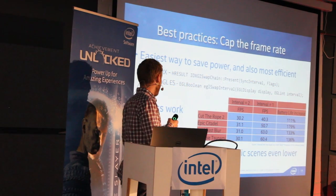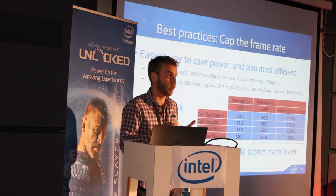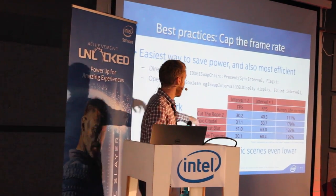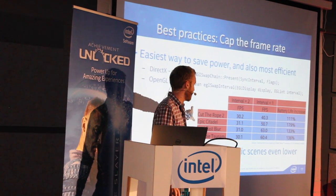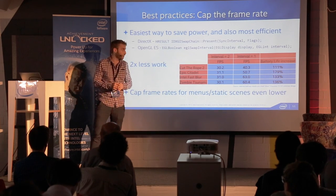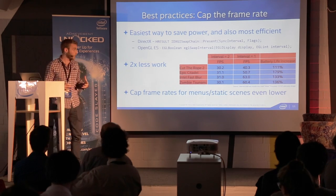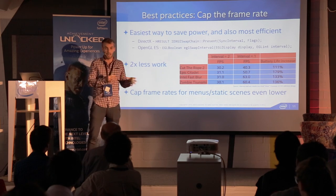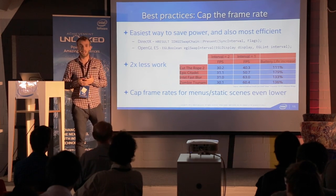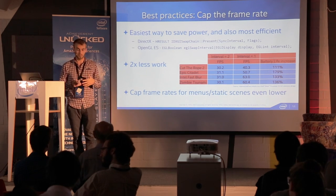With both DirectX and OpenGL ES — so for Windows or Android — it's literally one line of code. For those of you using Unity, it's just one checkbox. On an Atom processor, I measured power savings from going to an uncapped frame rate to capping at 30 FPS, and in some cases you get up to 80% more battery life simply by capping the frame rate. You can also cap even lower — say 10 FPS — for static scenes or menus, then raise the frame rate when the user touches the screen.